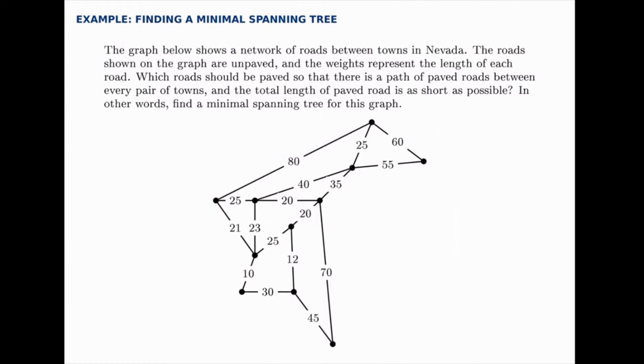We'll start with the shortest length that we see which is 10, so we'll add this first road here. And then there's a 12, we'll add that. The next shortest there are two 20s so we'll add both of them. Again no loops exist yet.